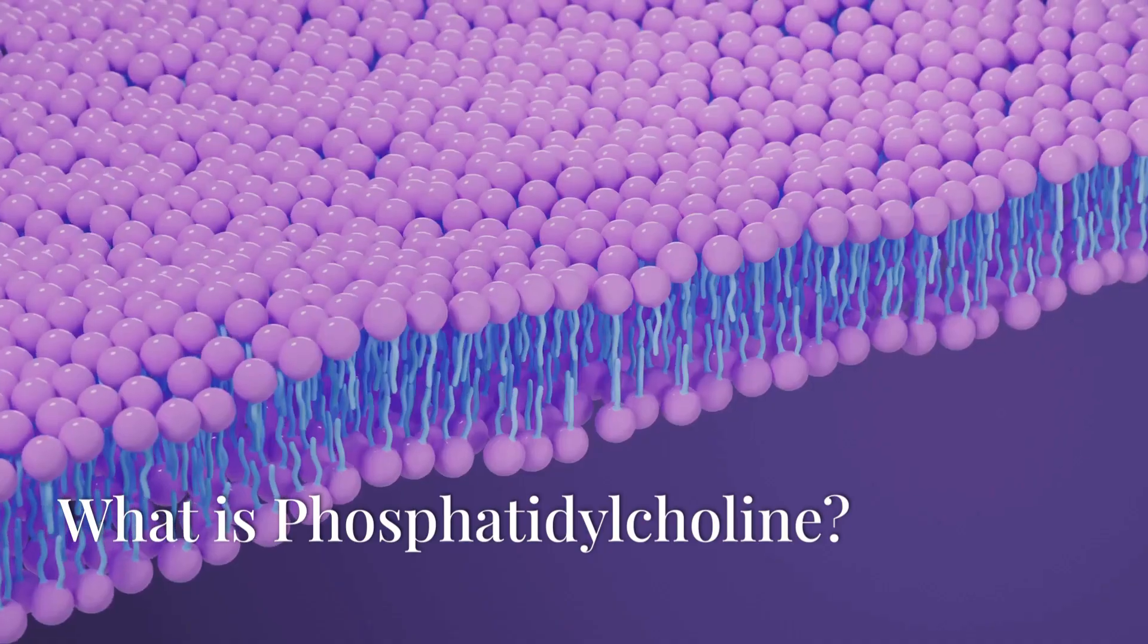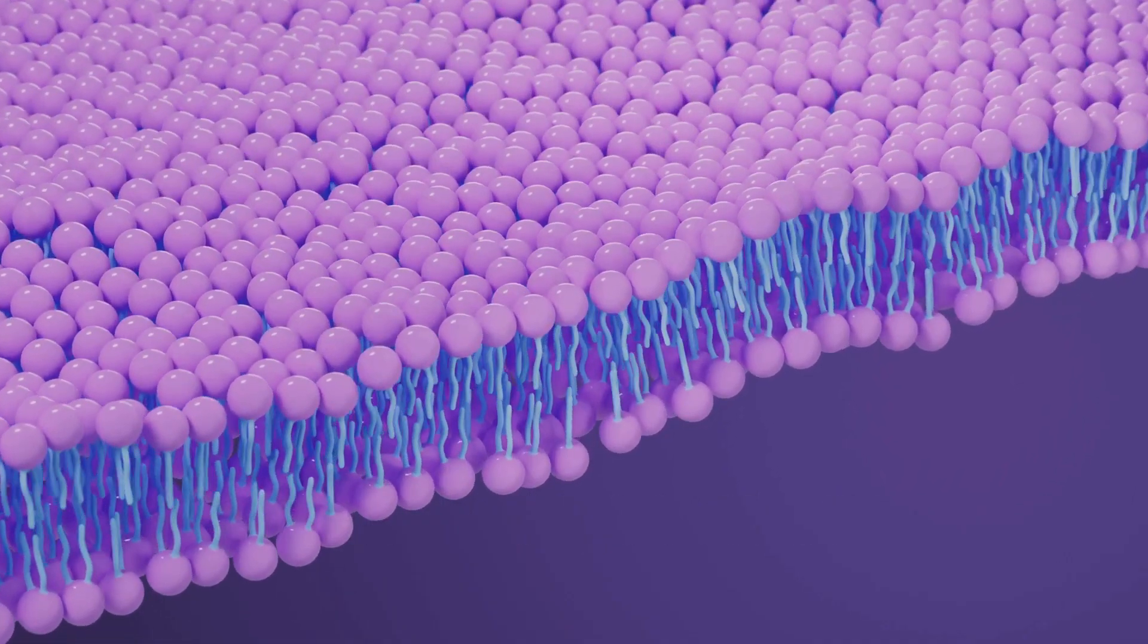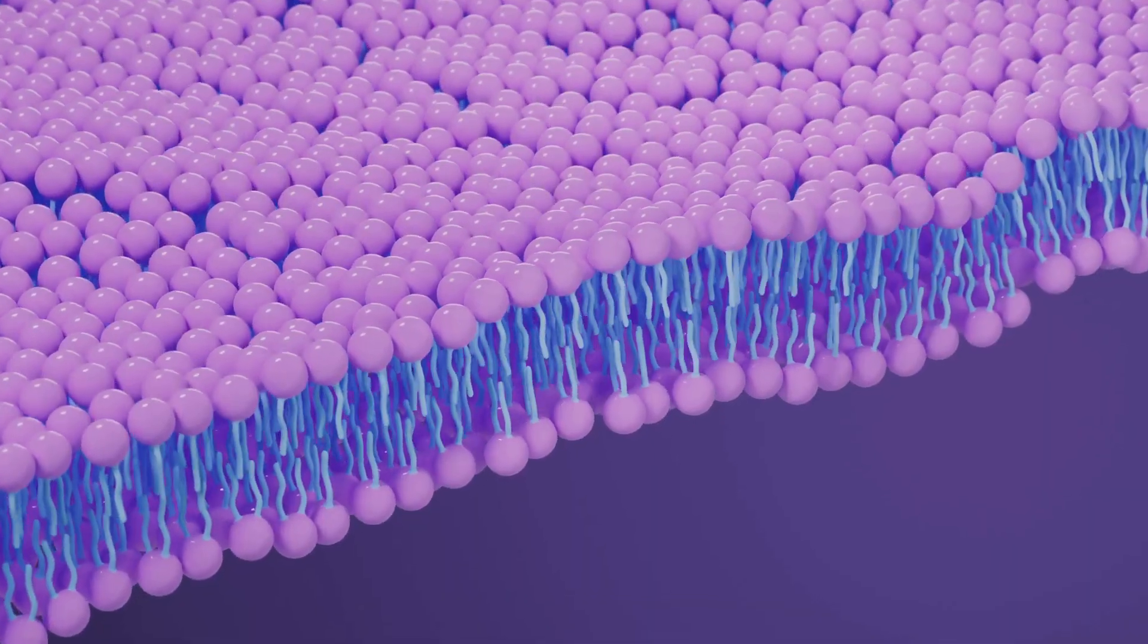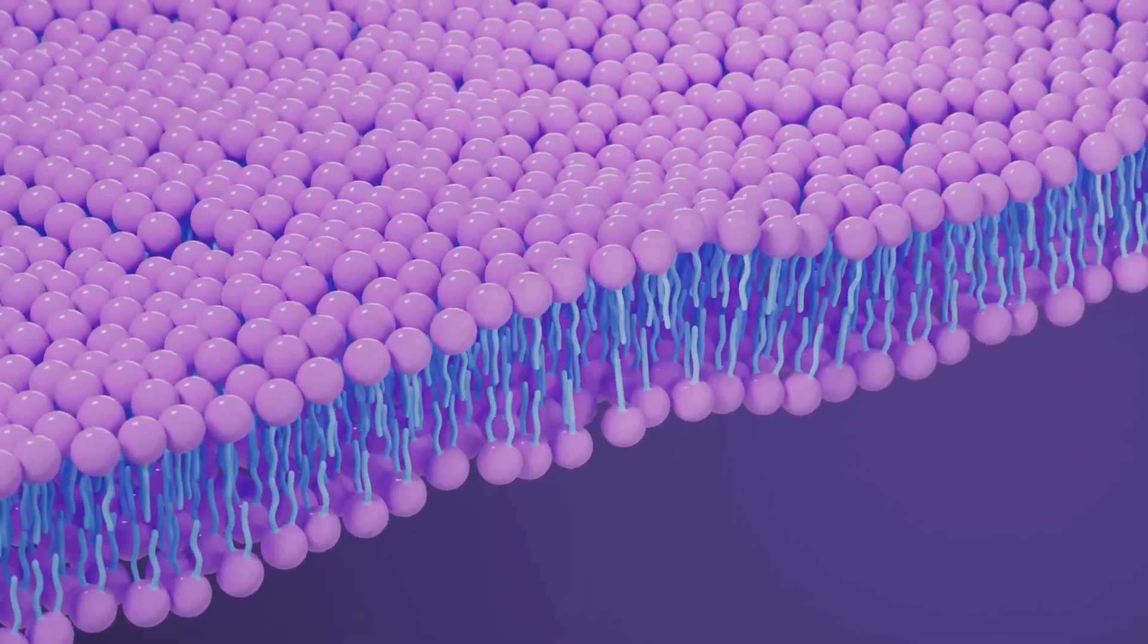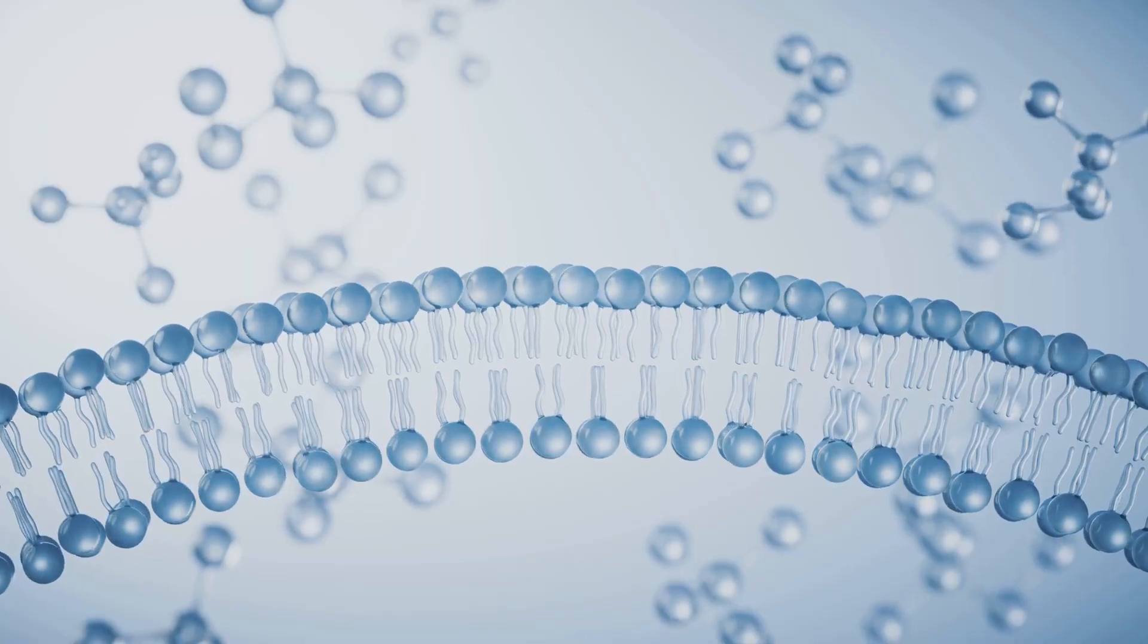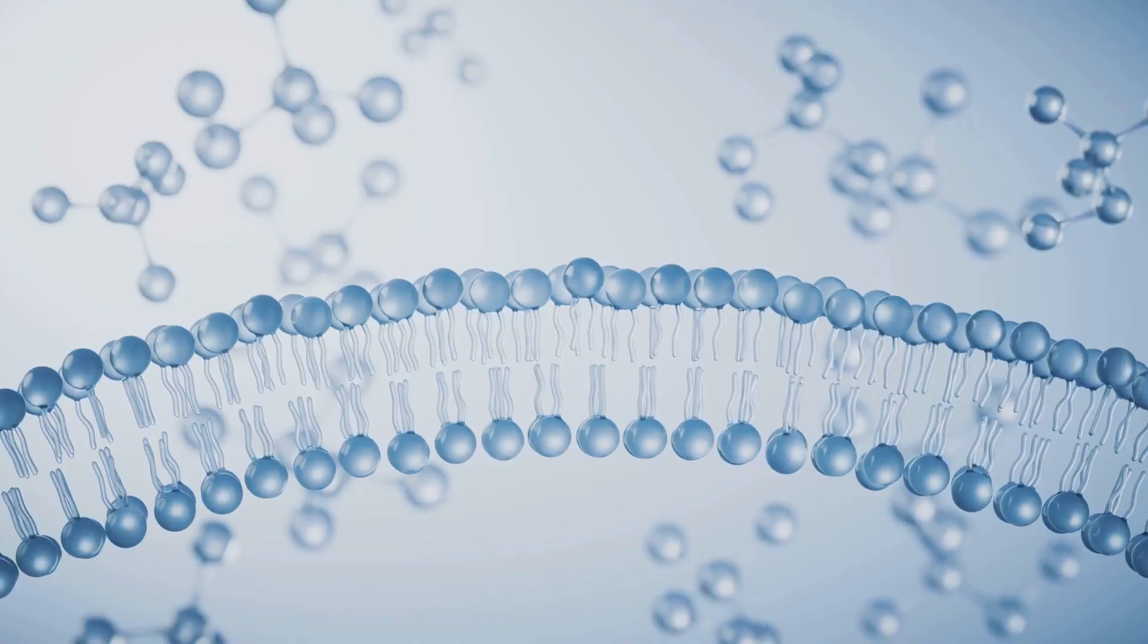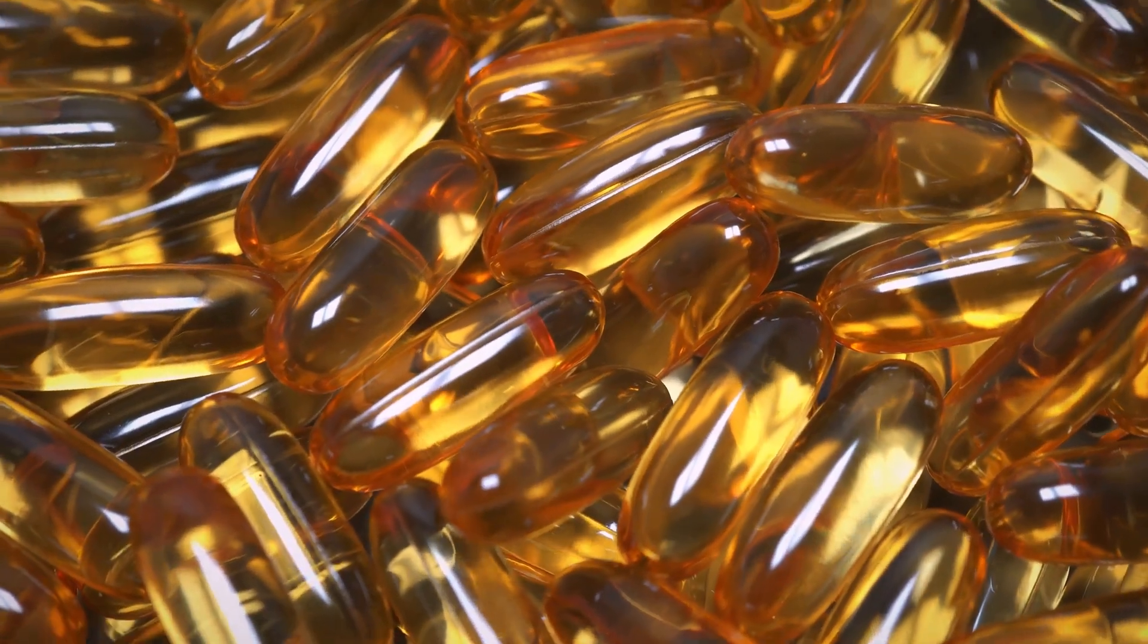What is Phosphatidylcholine? Phosphatidylcholine or PC is a key component of life itself. As one of the most abundant phospholipids in the body, it is integral to maintaining the structural integrity and fluidity of cell membranes.